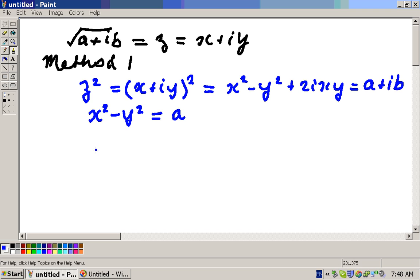And the imaginary parts, let's change the colour so we can recognise them. So this equation here is 2XY equals B, and I'll call that equation 2, and this one here will be equation 1.